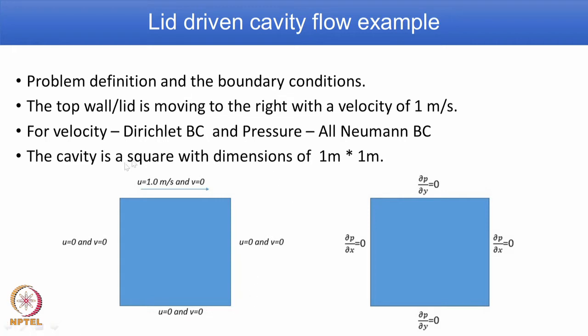So on the left you see the explanation for velocity boundary condition: top is the lid moving with a velocity of 1 meter per second and v equal to 0, and all the three sides velocity equal to 0. For pressure on all four sides we have Neumann type boundary condition. So accordingly in the x direction it is ∂p/∂x = 0, in the y direction it is ∂p/∂y = 0.